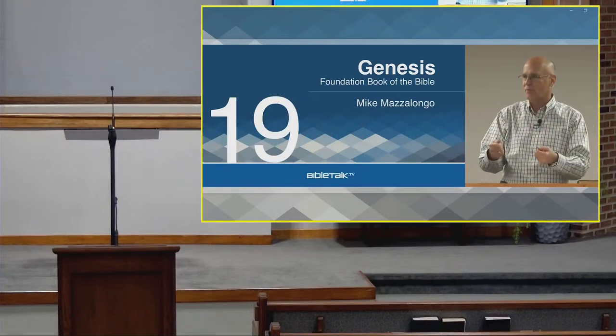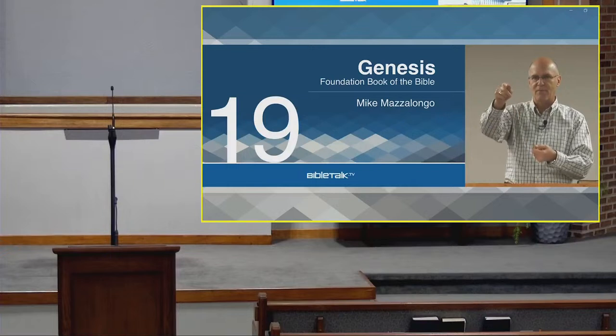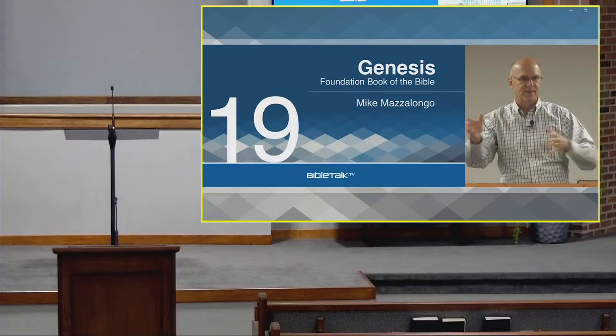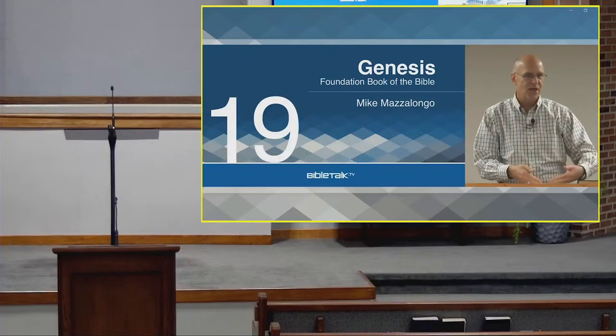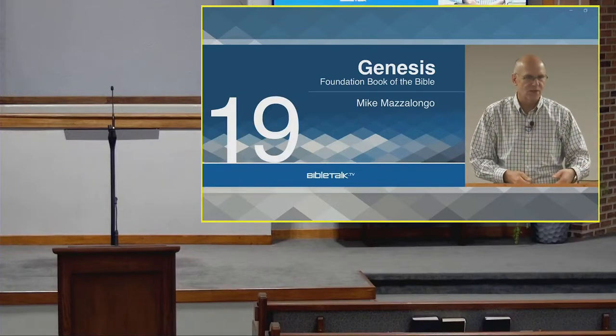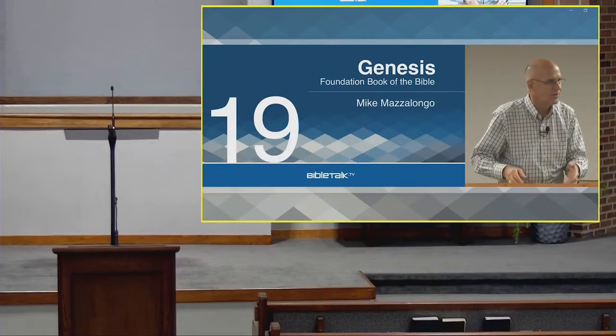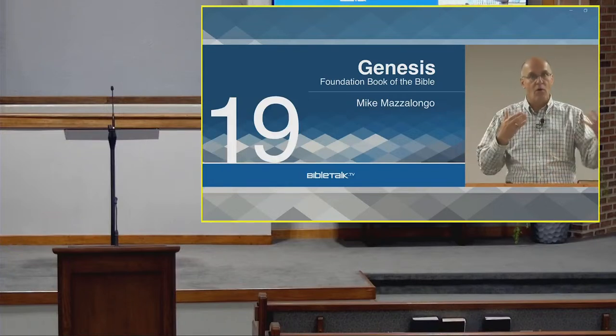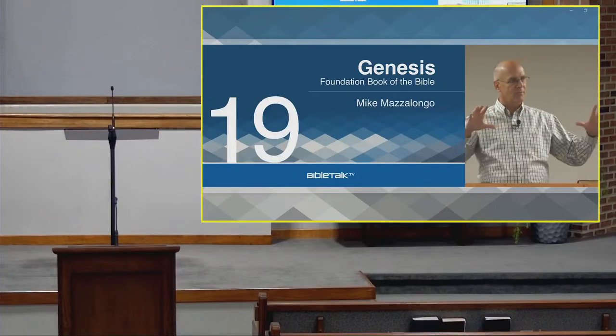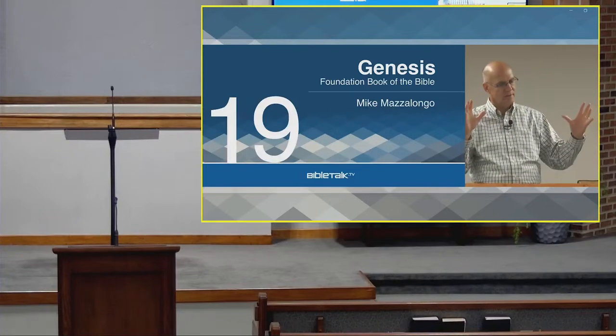In a movie, you've got a script that says camera one and then this angle, camera two. But in Genesis, there's no such direction. You have to figure out — now they've backed up and given us the big story.